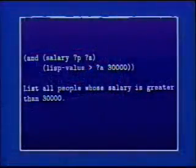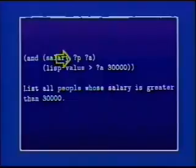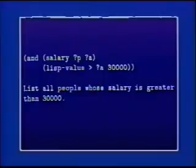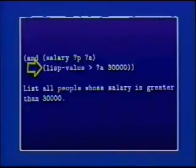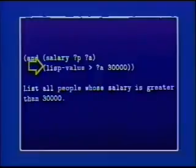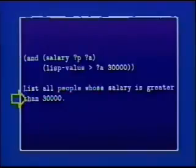Who are all the people who make more than $30,000? AND — the salary of some person ?p is some amount ?a, and LISP-VALUE greater-than ?a 30000. LISP-VALUE here is a little piece of interface that connects the query language to the underlying Lisp. What LISP-VALUE allows you to do is call any Lisp predicate inside a query. So here I'm using the Lisp predicate greater-than — all the people whose salary is greater than $30,000.